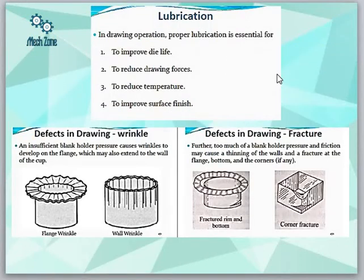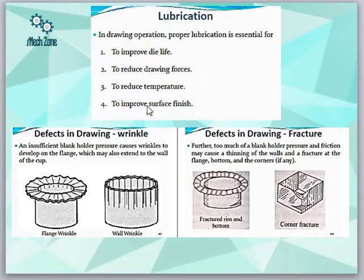Next is lubrication, which has been discussed in previous lectures as well. It is very important mainly to reduce friction and temperature. Since the metallic sheet is being drawn into the die cavity, there is friction between the metallic sheet and the die walls, so that friction needs to be removed or reduced. Lubrication is important to improve die life and to reduce drawing forces, since friction creates opposing forces.